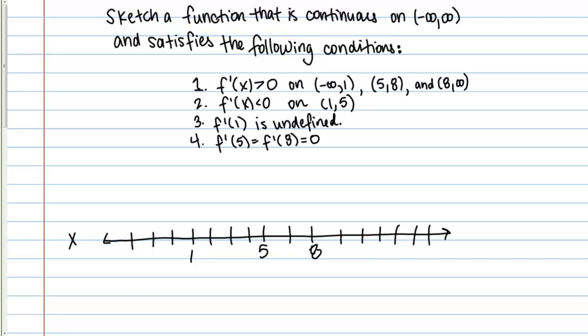Now we can put information about the derivative on the number line. Starting with criteria 1: F prime of X is positive on the following intervals. On negative infinity to 1 — let me divide up my number line there at 1 — F prime of X is greater than 0 on this interval.